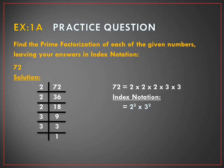After learning about prime factorization and index notations, let's solve some questions from Exercise 1a. We need to find the prime factorization of 72, leaving the answer in index notation. We start with the smallest prime number, 2: 72 ÷ 2 = 36, 36 ÷ 2 = 18, 18 ÷ 2 = 9. As 9 is odd and not divisible by 2, we move to the next prime, 3: 9 ÷ 3 = 3, and 3 ÷ 3 = 1.